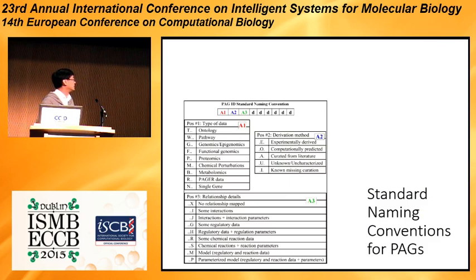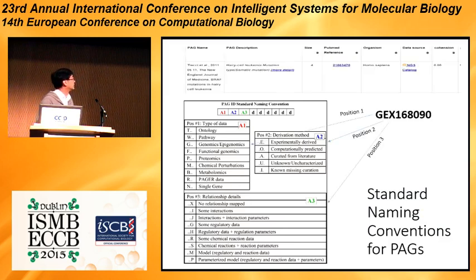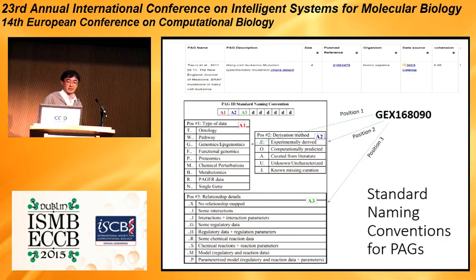The relationship details range from a simple list with no relationship map, to chemical reactions and dynamic models for future network biology applications. As an example, you have three positions and several digits forming a code that describes a leukemia-related gene signature. One thing to notice is that there's a cohesion measure, which I'll talk about later.